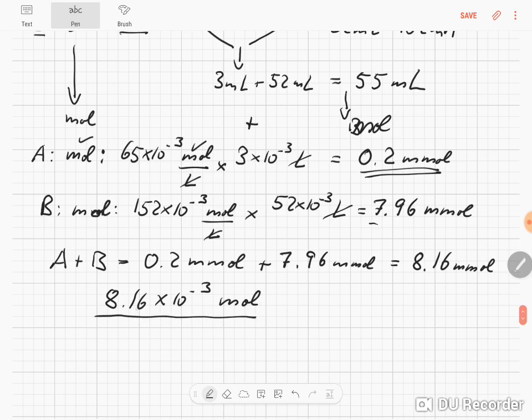In a total of 55 times 10 to the minus 3 liter, this gives 0.148 mole per liter, which is the same as 148 millimolar.